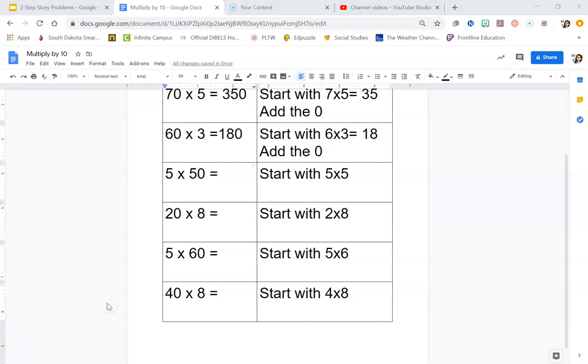You should have just tried these next 4 on your own, so let's see how you did here. So 5 times 50. You're going to start with 5 times 5, which equals 25. Add the 0 on the end, so your answer should be 250.